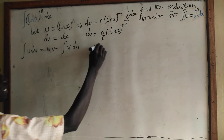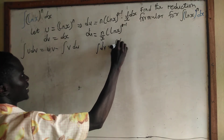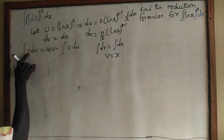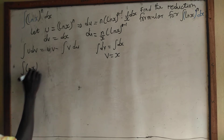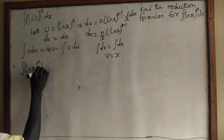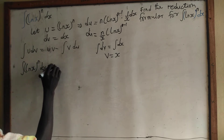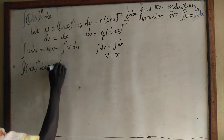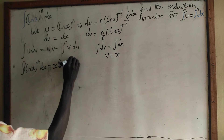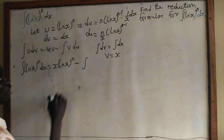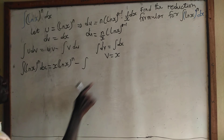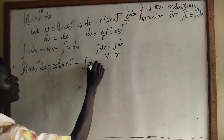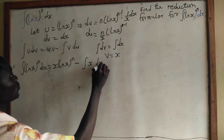And if we integrate dv equals dx, we get v equal to x. So we have: u is (ln x) to the power n, v is x, and du is equal to n over x times (ln x) to the power n minus 1 dx.